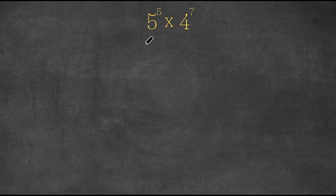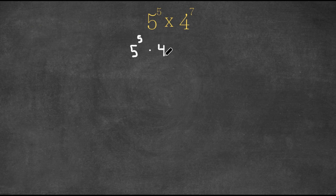So what I'm first going to do is I'm going to rewrite this as 5 to the power of 5 times 4 to the power of 5 plus 2.